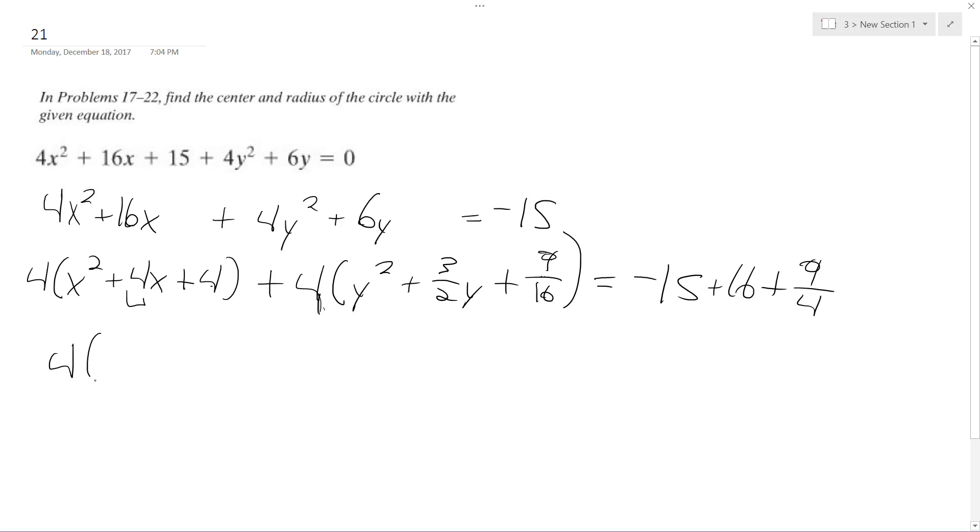So this becomes 4 quantity x plus 2 squared plus 4 times y plus 3 over 4 squared equals 1 plus 9 fourths, which is just 13 over 4.